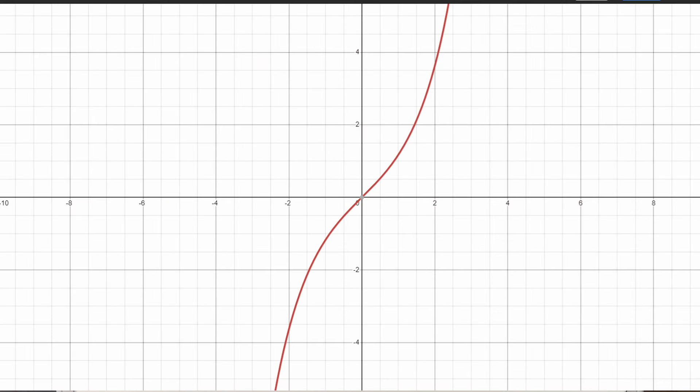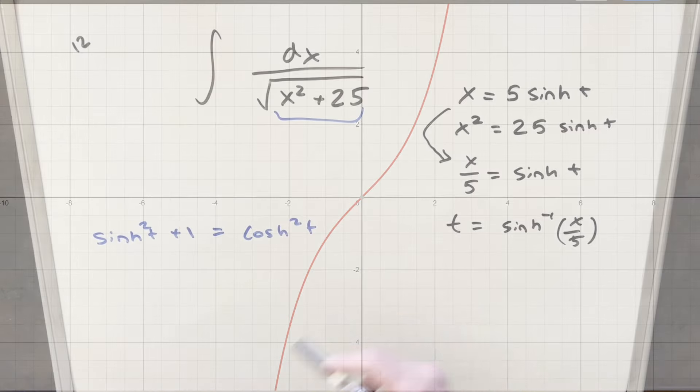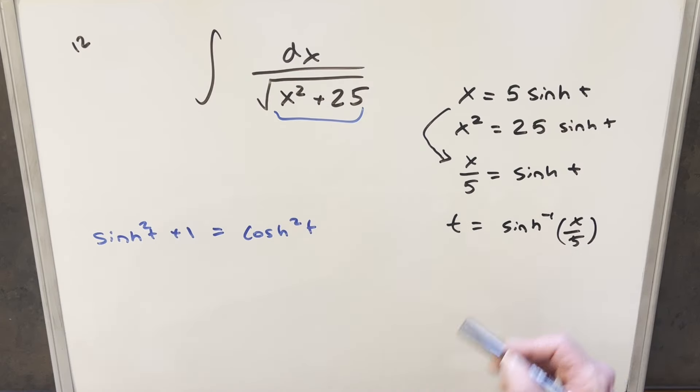And just notice the problems we had the other day inverting tangent, it's not relevant here because sinh actually is 1 to 1. Sinh actually passes the horizontal line test. So we don't have any problems inverting this. Even from this standpoint, doing it this way is going to be simpler.